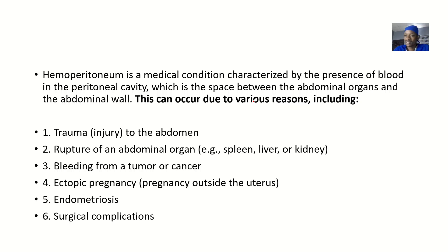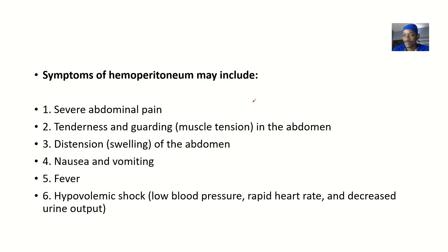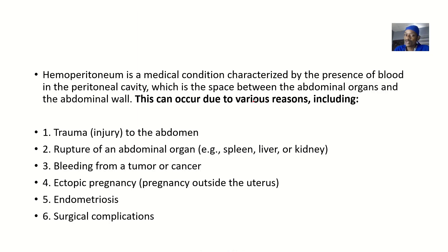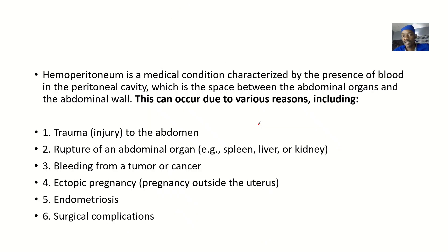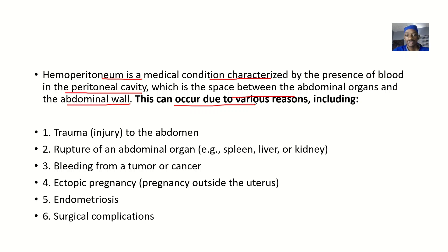Let's define this and talk about the possible causes and symptoms. Hemoperitoneum is a medical condition characterized by the presence of blood in the peritoneal cavity. The peritoneal cavity is the space between the abdominal organs and the abdominal wall. This can occur due to various reasons.